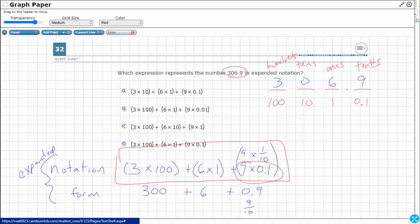But look at this A. 3 times 10. No, the 3 is not in the 10 spot. The 3 is in the 100 spot. 3 times 100. Check. 6 times 1. Check. Oh, look at this. 9 times 100. It's 9 times 1-tenth. That one's wrong.